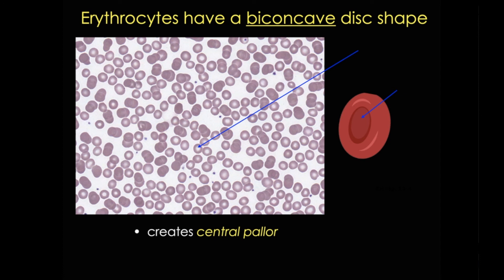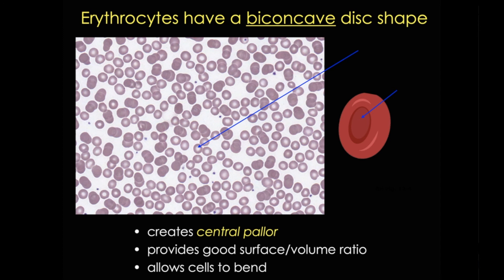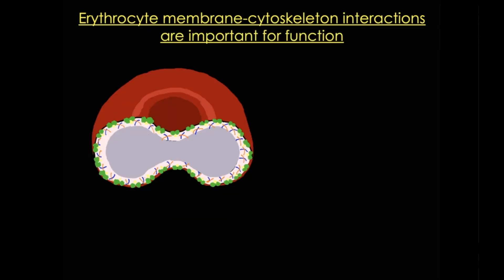But why is that particular shape so important? The biconcave shape provides a large surface-to-volume ratio, and this supports good blood gas exchange. The shape also provides flexibility, and this is critical because these cells need to bend and adapt to the irregular twists and turns and small diameters of capillaries. In other words, their shape allows them to do their job. But what actually gives the cells this biconcave shape? Well, this depends upon the erythrocyte plasma membrane and its interactions with the cytoskeleton. We know an awful lot about erythrocyte plasma membranes, largely because these cells are readily available to study. There are important membrane proteins including ion channels and transmembrane proteins that interact with the cytoskeleton, and these interactions are critical for stabilizing the membrane, maintaining that biconcave shape, and giving the cells flexibility.